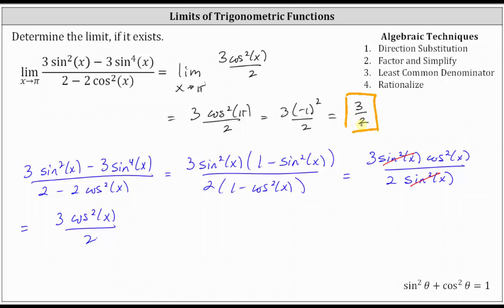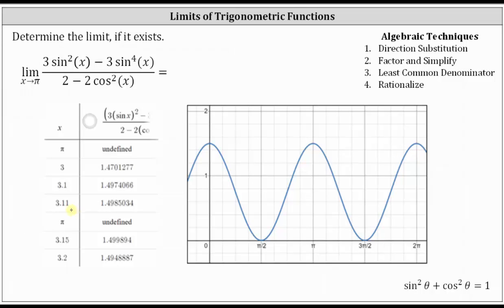And we can check this graphically or using a table of values. Beginning with a table of values, remember pi is approximately 3.14. So if we approach pi from the left, our values are less than pi. Notice I'm using the values of three, 3.1, 3.11, and we can see the function values are approaching 1.5 or three halves. And if we approach pi from the right with values greater than pi, I use the values 3.2 and 3.15. We can see the function values are approaching 1.5.